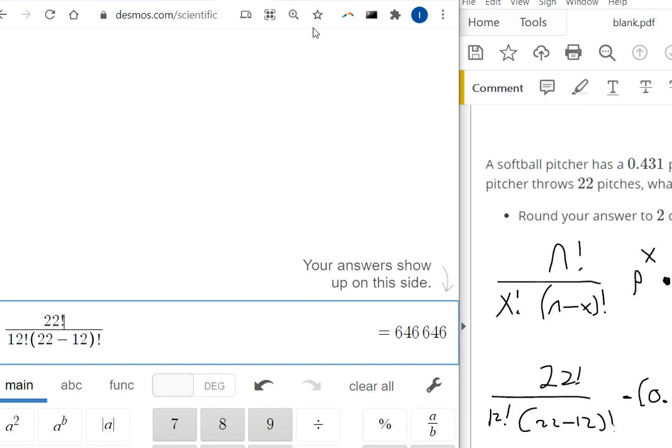That's the problem for students sometimes. Use the right arrow to get out of the denominator. We have 0.431, the probability of a success, to the 12th power, and then right arrow to get out of the exponent.